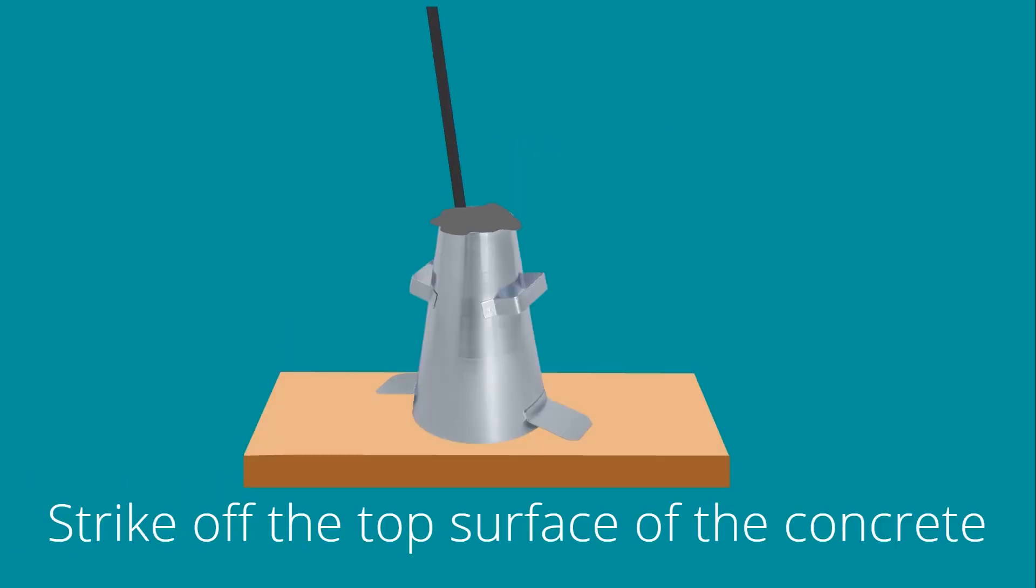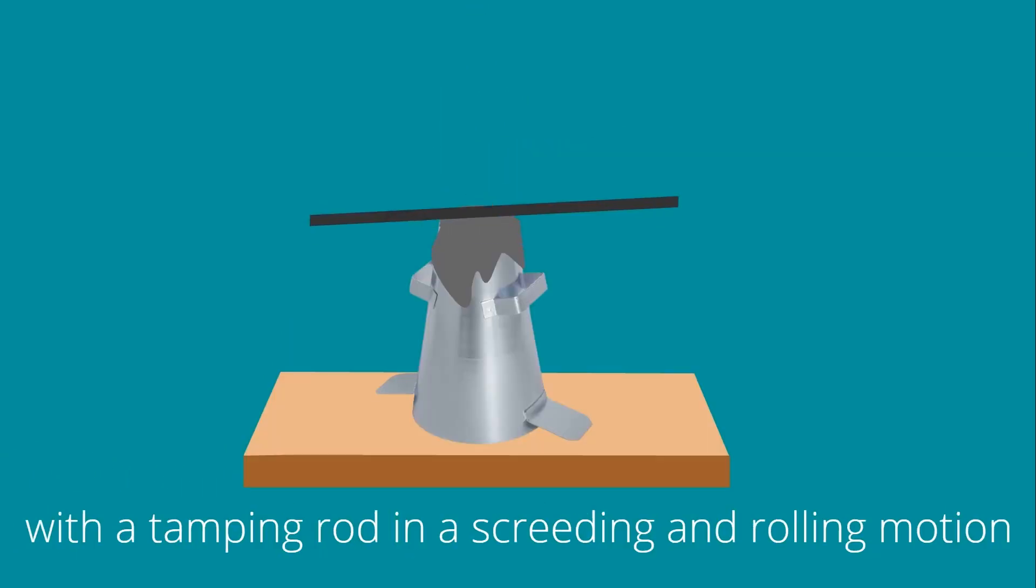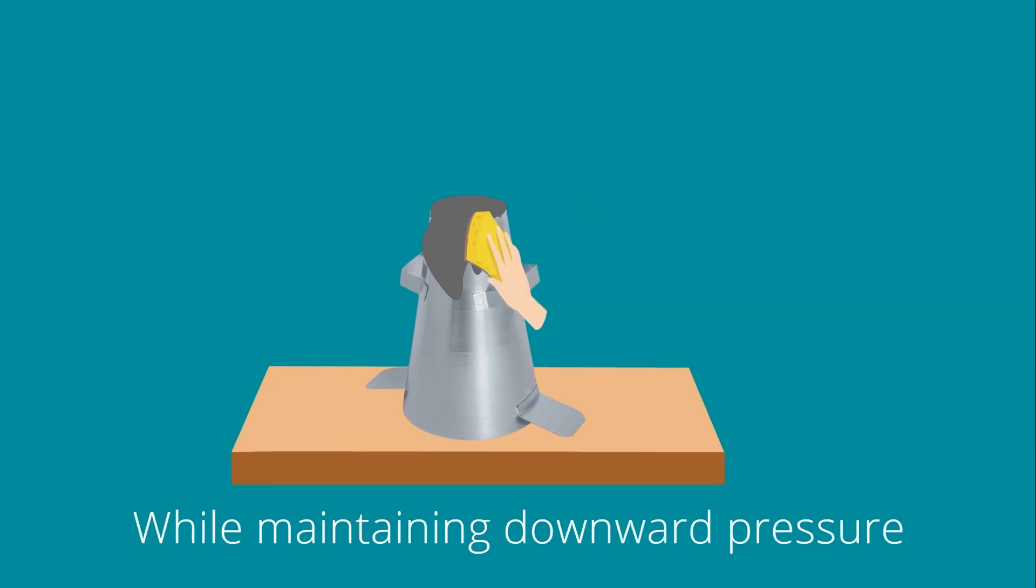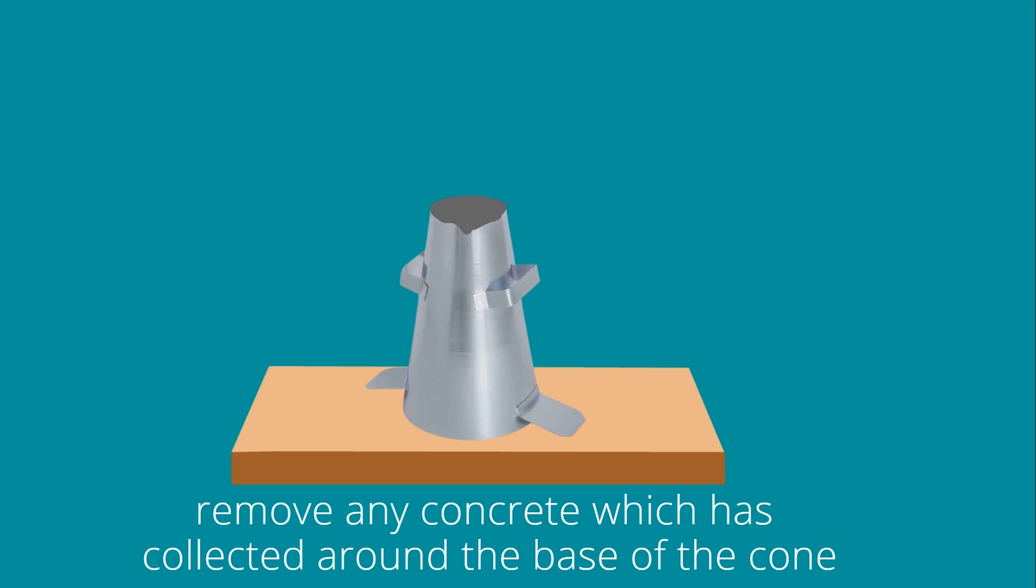Strike off the top surface of the concrete with a tamping rod in a screeding and rolling motion. While maintaining downward pressure, remove any concrete which has collected around the base of the cone.